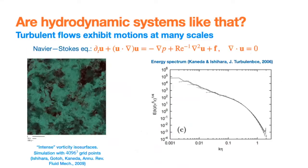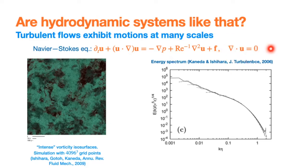The question is: are hydrodynamic systems like this? Do hydrodynamics have this built in? To go in that direction, let me introduce the Navier-Stokes equations — partial differential equations for a velocity field in three dimensions. The left-hand side has the time derivative and advection term; the right-hand side has forces and pressure gradient eliminated by the incompressibility condition, plus diffusion and some forcing that injects energy into the system, which is then dissipated by diffusion.